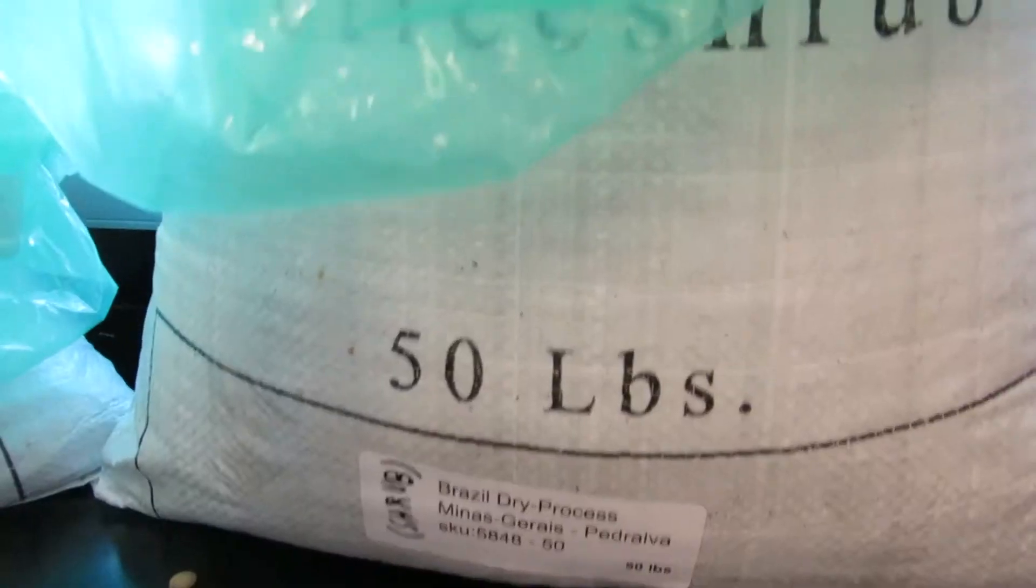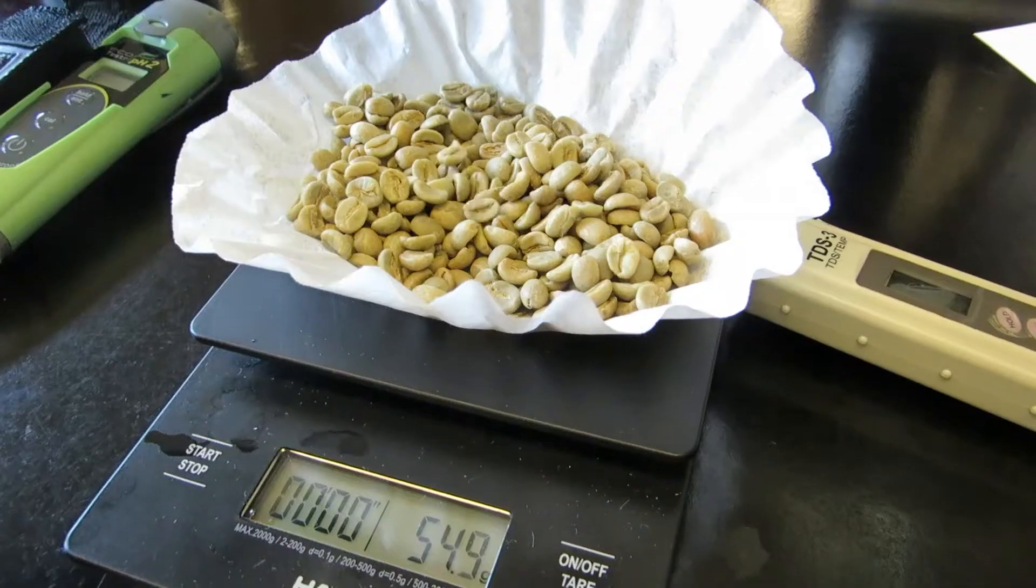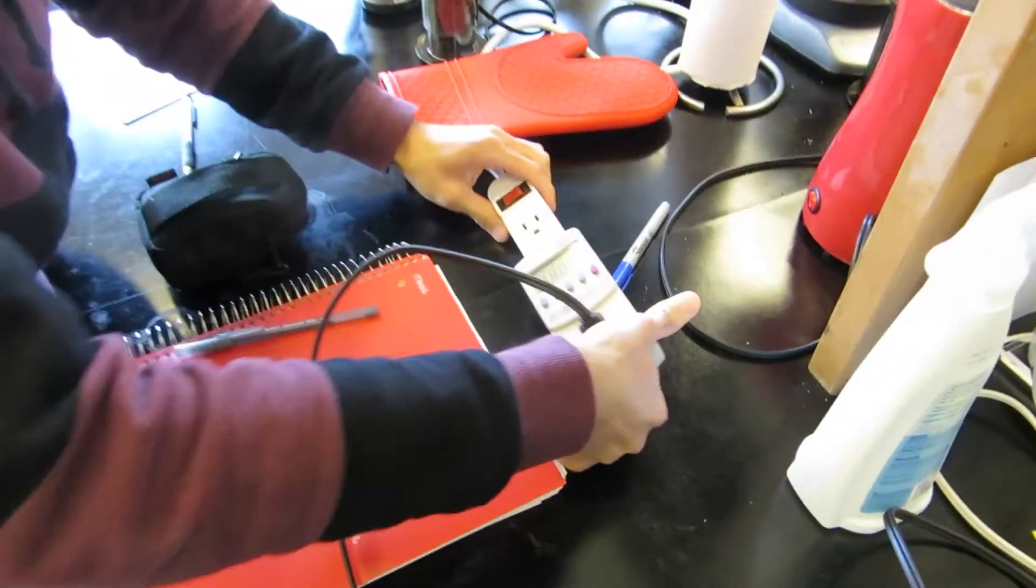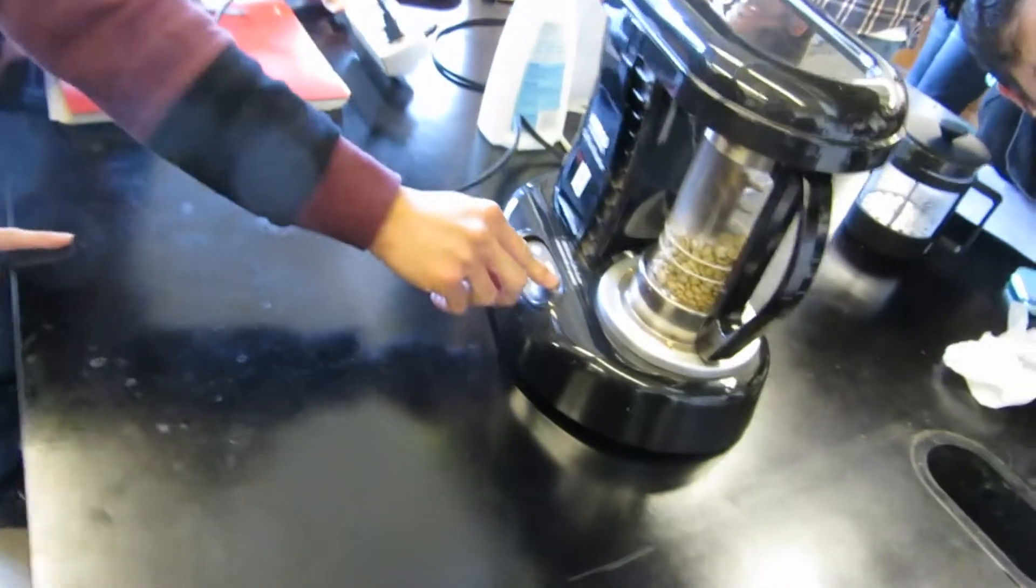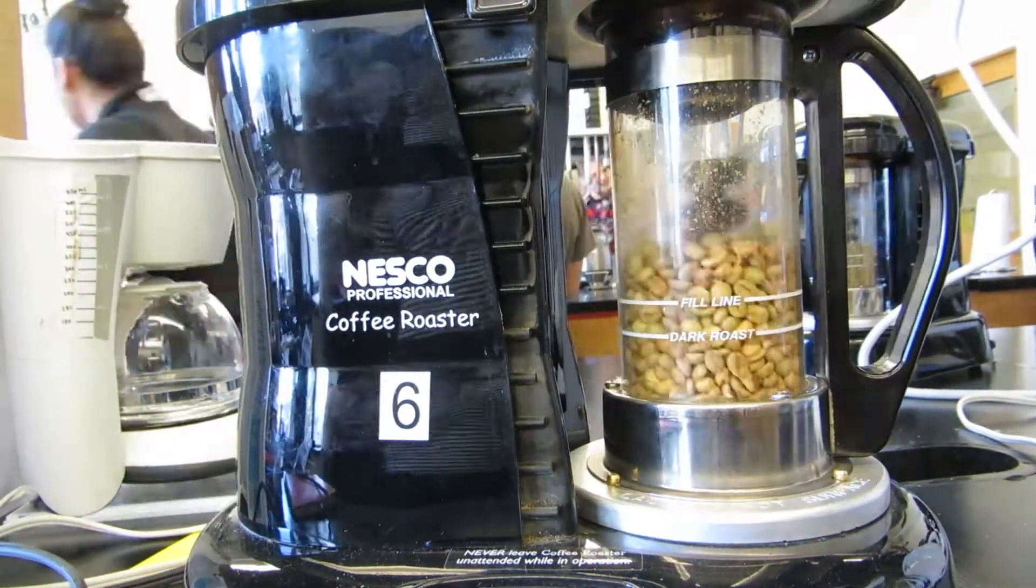For our final brew, we decided to use the Sumatra beans. We weighed out roughly 136 grams and decided to roast them in the Nesco Roaster. We chose this method because we found it to be the most reliable and found that the power usage was not that significant.